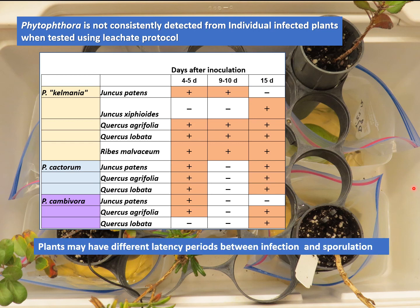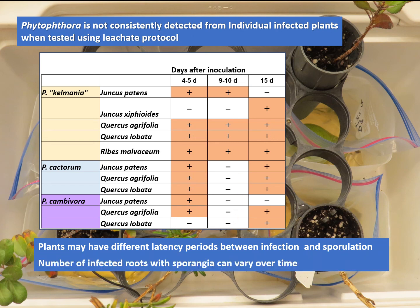There are a number of possibilities for why this happens. In the case of an inoculated plant, there are different latency periods between infection and sporulation — some had very short latent periods, a few showed longer ones. Also, the number of infected roots with sporangia that can release spores varies over time, affected by how many live roots there are and when those roots were infected. Sporulation occurs most readily on recently infected roots; once roots are dead and decaying due to secondary organisms, they won't produce many sporangia.